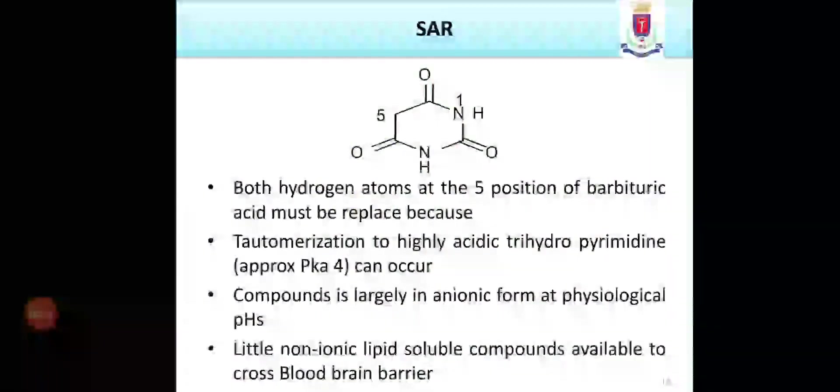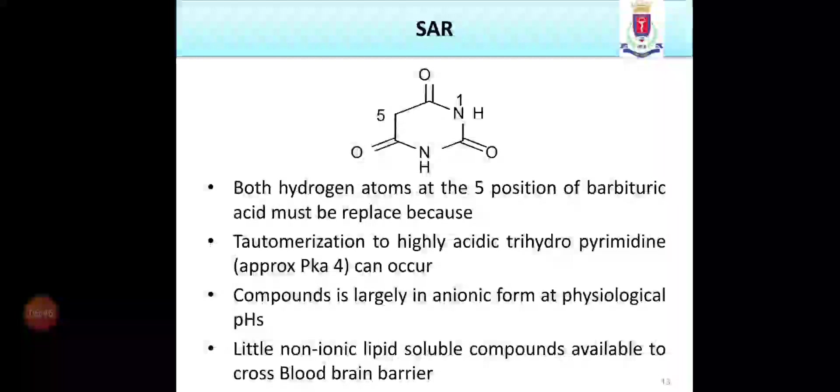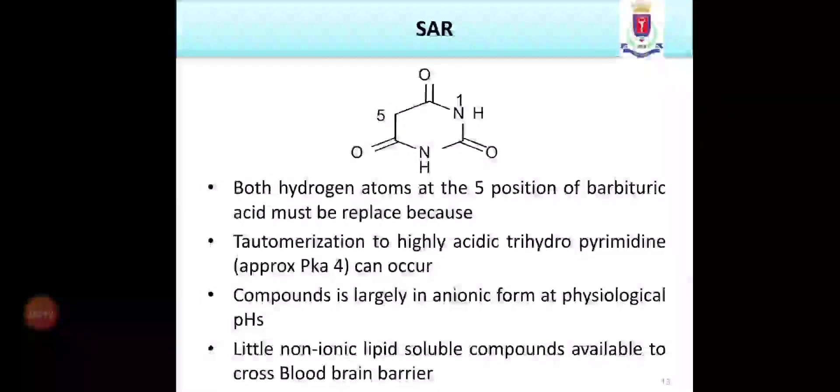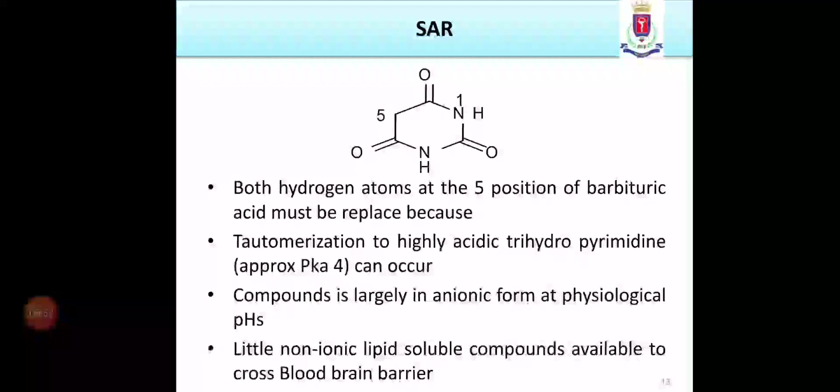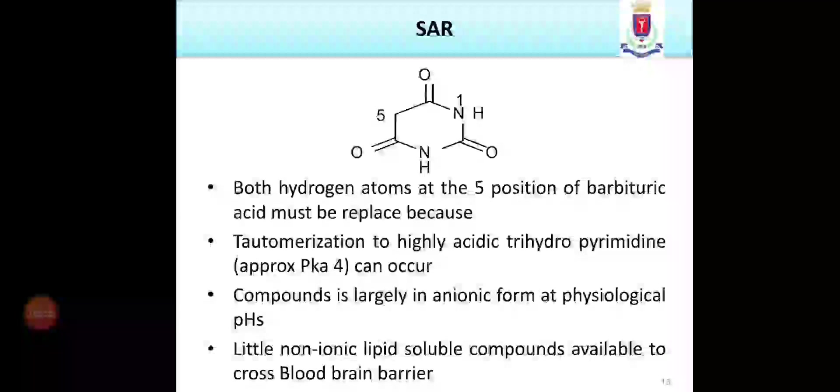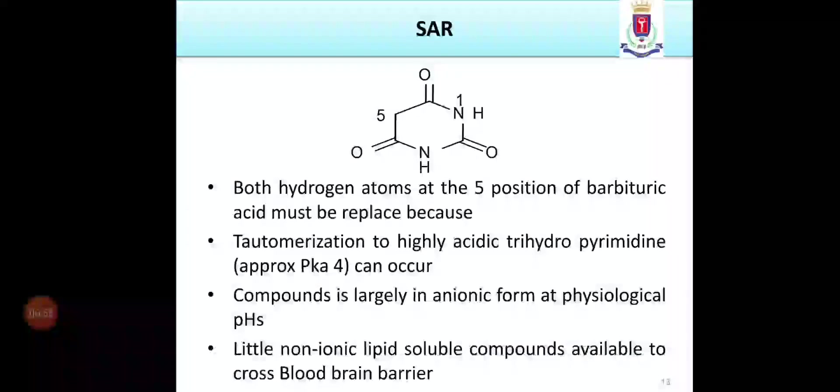Structure activity relationship of barbiturates. Barbiturates require the basic ring which is on your screen. It is pyrimidine 2,4,6 trione. This is the basic requirement for the sedative and hypnotic activity. Look at the position five. This five position is very important. Both hydrogen atoms at the five position of barbituric acid must be replaced. Because, there are three reasons. The first reason is, tautomerization to highly acidic trihydropyrimidine, approximate pKa 4, can occur. Tautomerism can occur here.